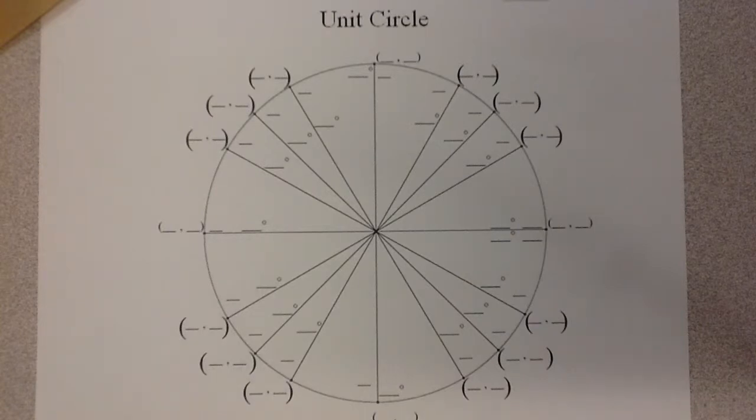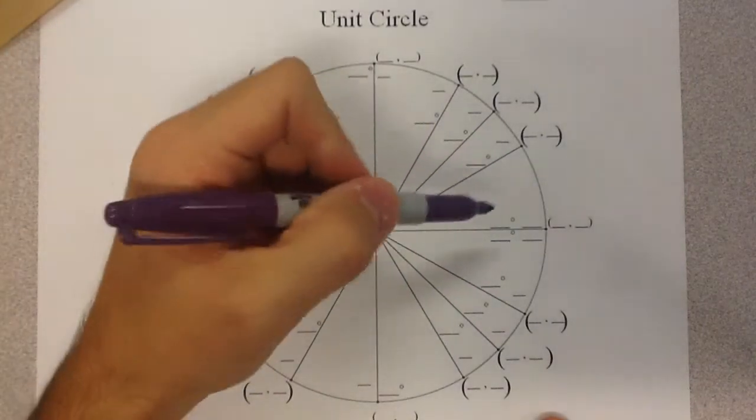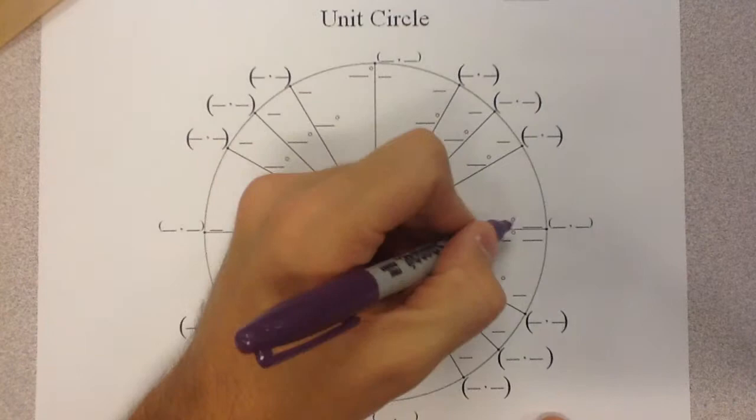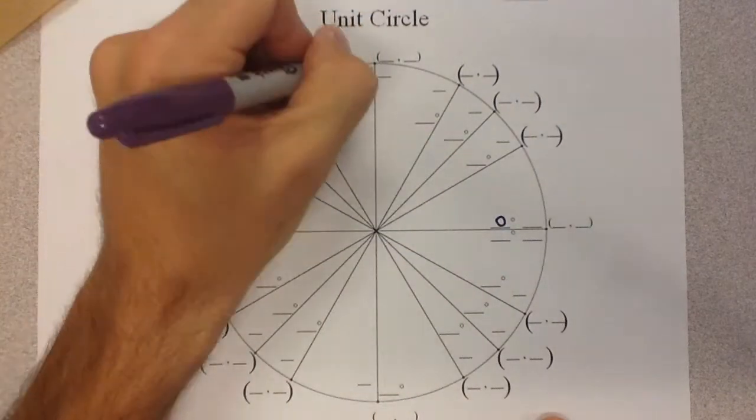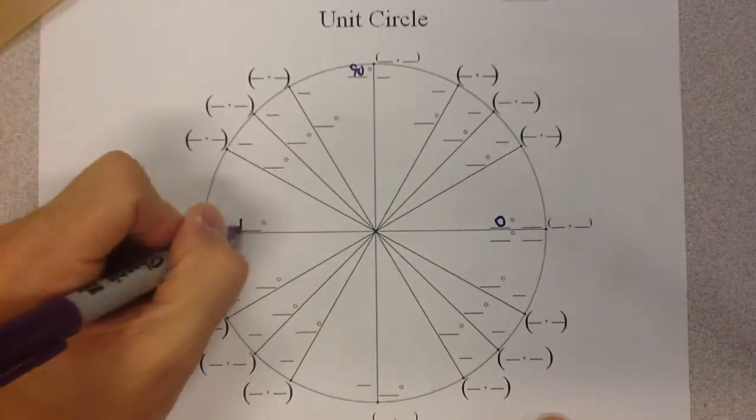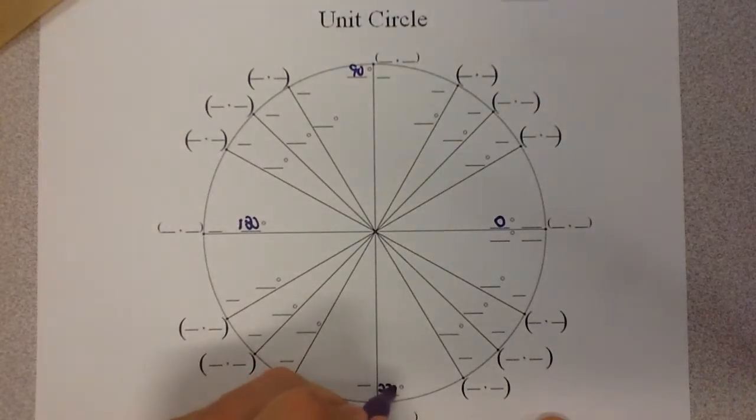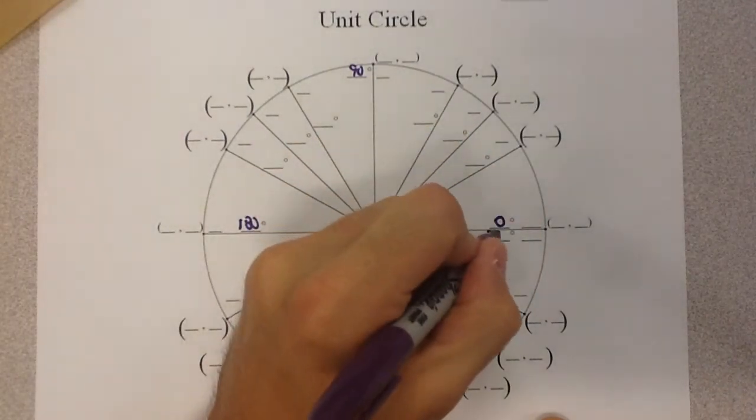Let's start with the stuff we should know automatically. We should be starting here, and this is going to be our initial side. So we should have 0, 90, 180, 270, and 360.